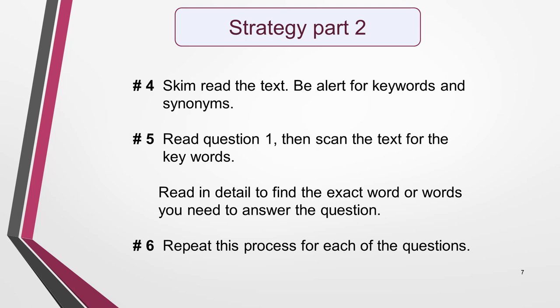When you've done this, go back and re-read question 1, then scan the first paragraph — maybe the second as well — until you find the location of the answer. Read this part of the text in detail to find the exact word or words you need to answer the question. Then you just need to repeat this process for each of the questions.